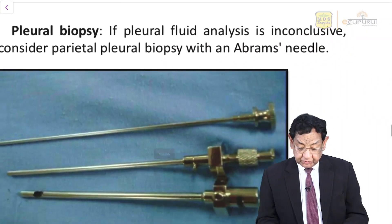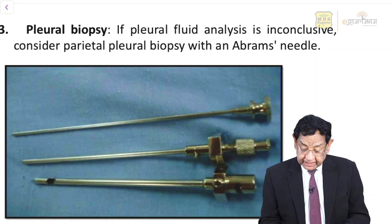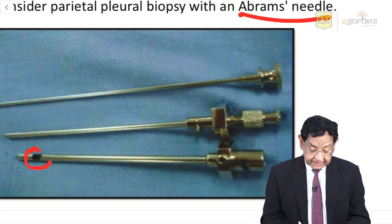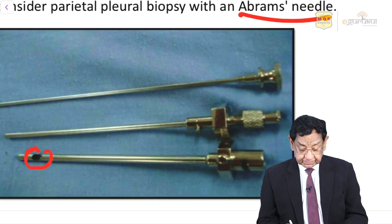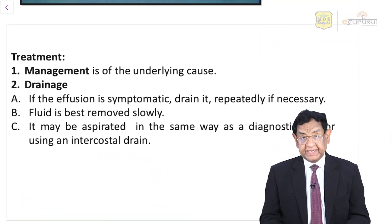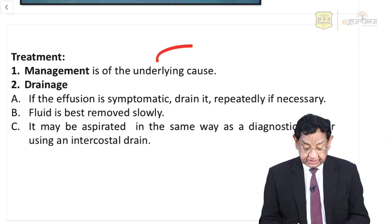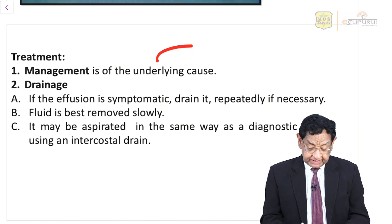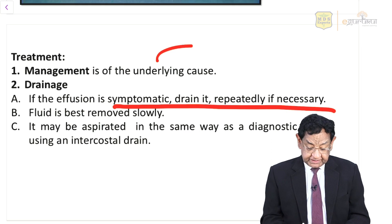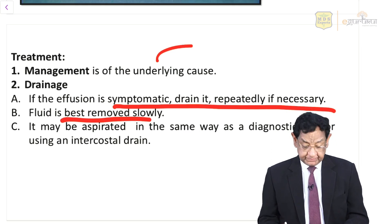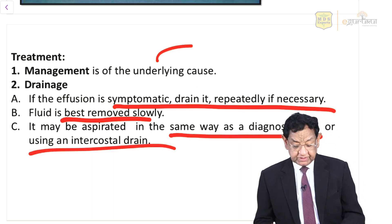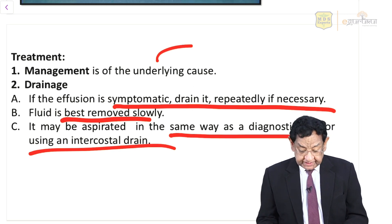Biopsy is done in some cases if needed — we use the Abrams needle. Look carefully: the hole is at a specific place on this needle. For management of any case of pleural effusion, treat the basic cause. Otherwise, we can go for drainage. If the effusion is symptomatic, drain it repeatedly if needed. It should always be removed very slowly — it may be aspirated the same way as a diagnostic tap, or by so-called intercostal drainage.